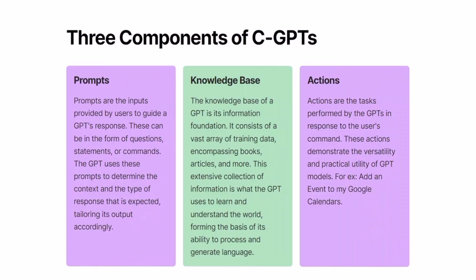Now let's talk about the three components of a custom GPT. The first one is prompts. These are the instructions that we give to the bot regarding how to respond, how to perform certain actions, etc. This is similar to what we used to do with ChatGPT — basically chatting. But here, these prompts are used by the bot to understand what kind of response or output is expected. So it's instructions for the bot — easy and simple.